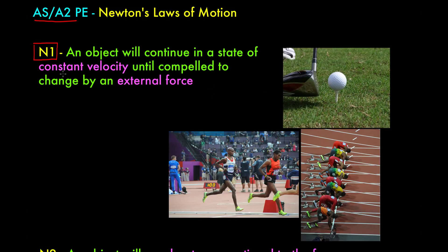Let's address the first things first. What do we mean by constant velocity? Well, it could mean something which is still. So let's take this golf ball here — it is completely still on that tee. That is constant velocity, that velocity being zero meters per second.